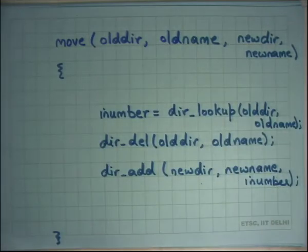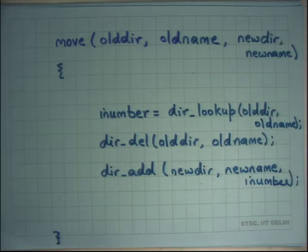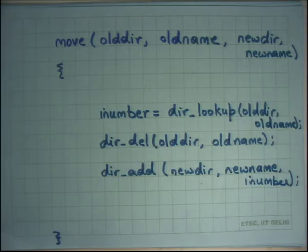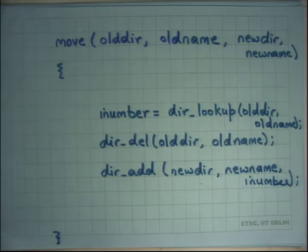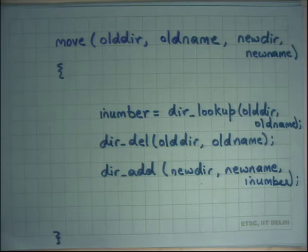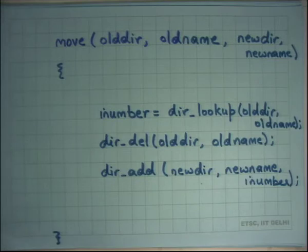Let's say I have a function called move, which moves a file from one directory to another. It moves old_name from old_directory and puts it as new_name in new_directory. It looks up the disk block (i-number), deletes old_name from old_directory, and adds new_name to new_directory at that i-number. This code is correct when running serially or with one big global lock protecting the entire function.